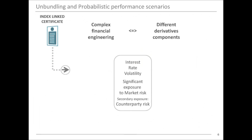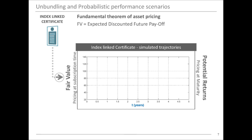Let's take the index-linked certificate as an example. This product has complex financial engineering with several embedded derivative components and multiple sources of risk. To get the full picture of this product, we need to apply the fundamental theorem of asset pricing — the common basis for pricing and hedging in financial markets. Intuitively, this theorem states that the fair value of any financial product is the expected discounted future payoff.